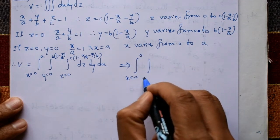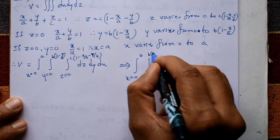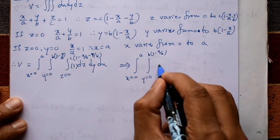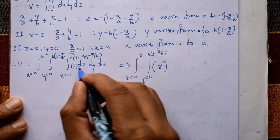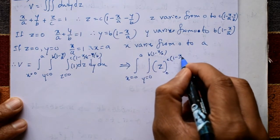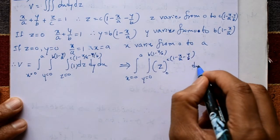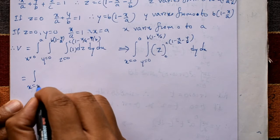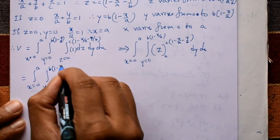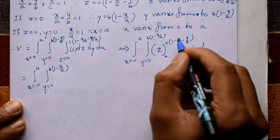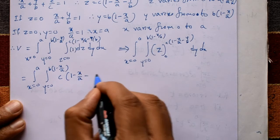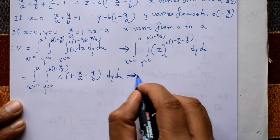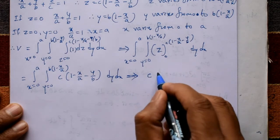Integrating with respect to z: the integral of 1 dz gives z, evaluated from 0 to c(1 - x/a - y/b). This gives c(1 - x/a - y/b). So we now have a double integral over x from 0 to a and y from 0 to b(1 - x/a) of c(1 - x/a - y/b) dy dx. The constant c is taken outside.